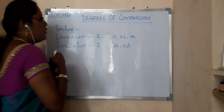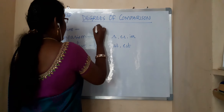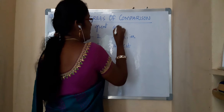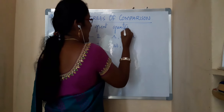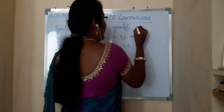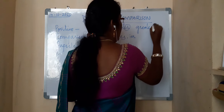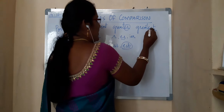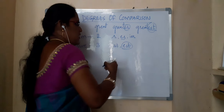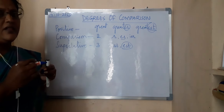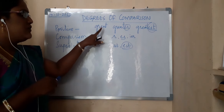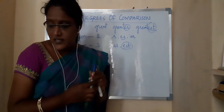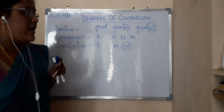For example, take the word 'great' — that is the positive degree. What becomes comparative? It becomes 'greater' — we are adding E-R. Then the superlative degree is 'greatest' — we are adding E-S-T. In positive degree we are not adding anything because we don't have any comparison here. So this is positive, comparative, and superlative.